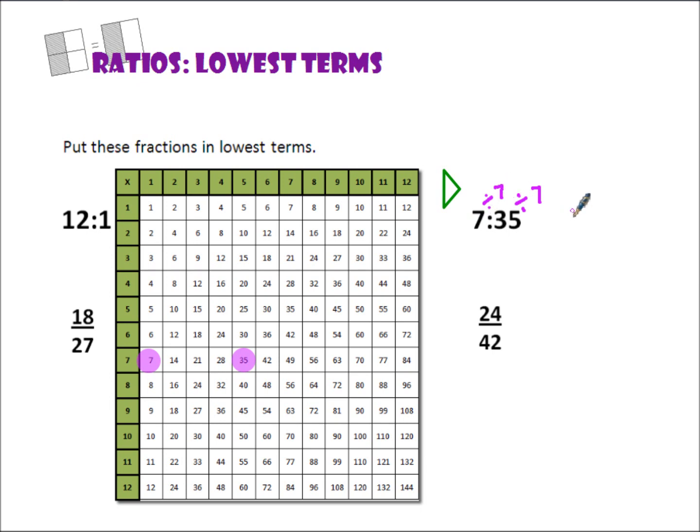7 divided by 7 is 1, and 35 divided by 7 is 5. I look at this, and I see that I have a 1, so I know that's in lowest terms. 1 to 5.